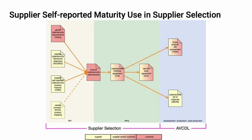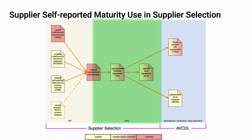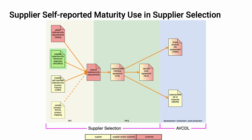This diagram shows the major documents used in both the Supplier Selection Request for Information (RFI) and Request for Quote (RFQ) activities, as well as the development, production, and post-production activities. The Supplier Self-Reported Maturity and the Supplier Cybersecurity Manufacturers Disclosure Statements are two of the primary documents which enable us to create tailored cybersecurity requirements and the Cybersecurity Interface Agreement. The CMM and AVCDL are key to establishing the Cybersecurity Interface Agreement because they allow us to identify gaps in the supplier's cybersecurity posture so that they can be addressed before implementation begins.